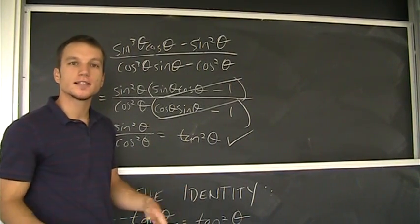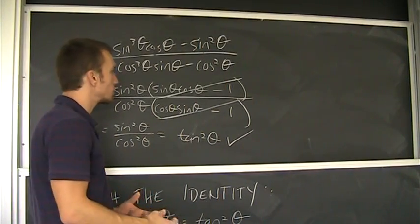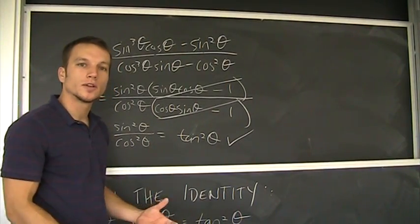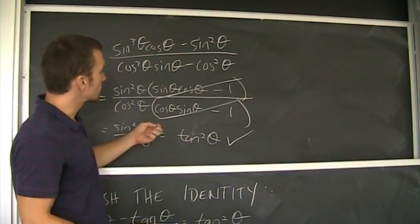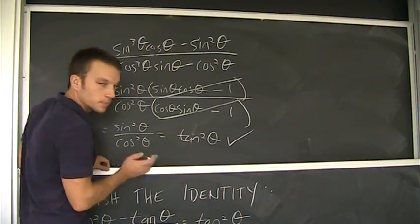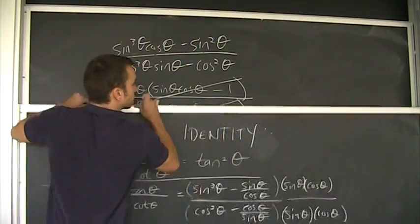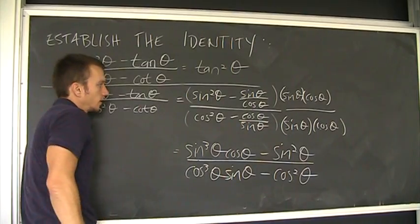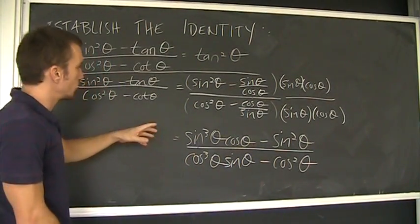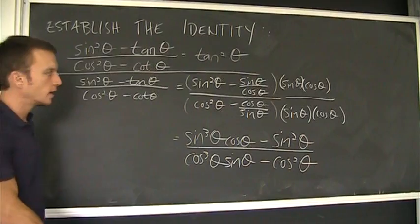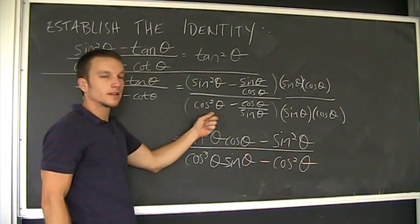So again, remember the key to these is practice. Practice, practice, practice. You've got to do a lot of them so you know what to do. You know when to do that next step. For example, in this problem if I go back. Let's review. The first thing was using the Pythagorean identity. And then when I get to here you'll see this a lot.